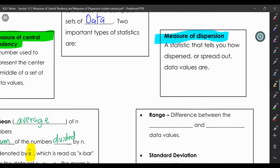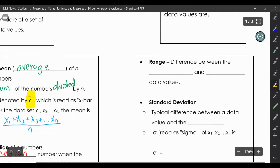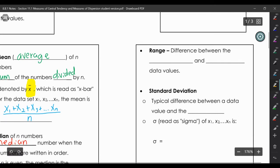Now measures of dispersion. The first one is the range. The range is the difference between the highest and lowest value. That will tell you how far the data is spread out.